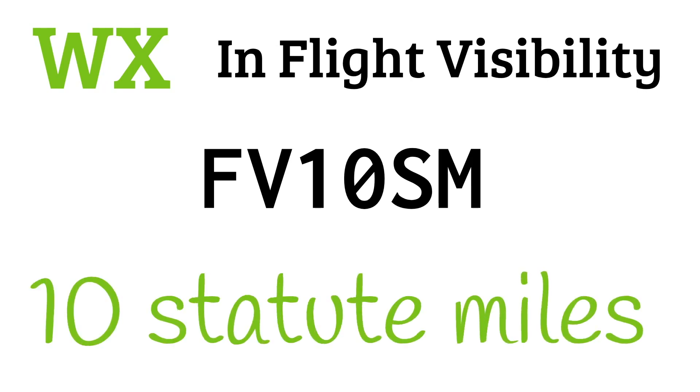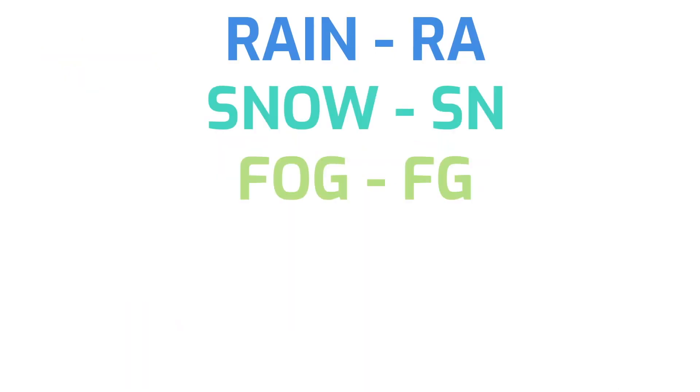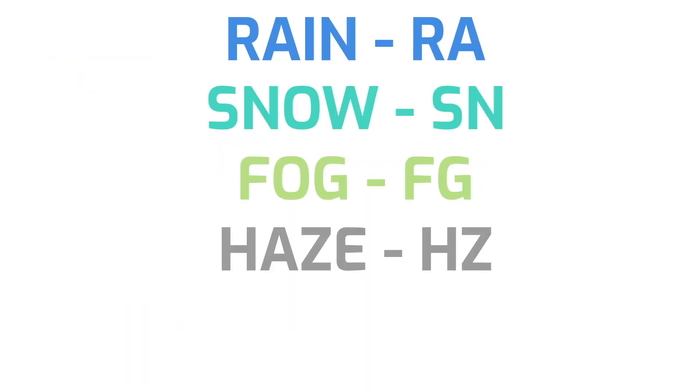You might also see WX on a PIREP, followed by a report of in-flight visibility. This is indicated by the letters FV followed by the visibility in statute miles — for example, FV10SM means 10 statute miles of in-flight visibility. FV99SM means the in-flight visibility is unlimited. You may also see reports of rain, snow, and other weather types using standard weather contractions.